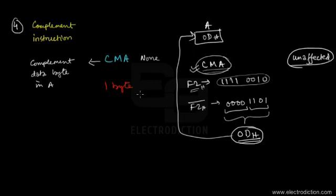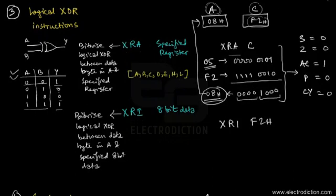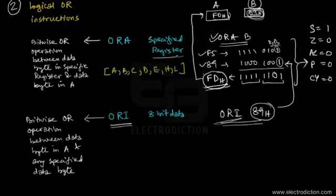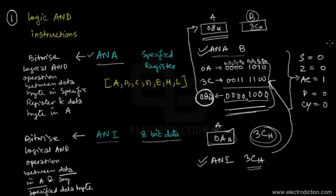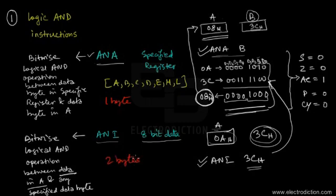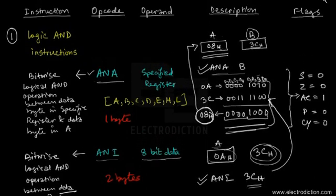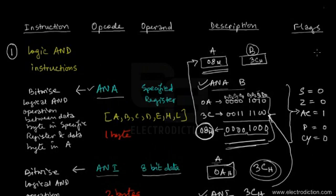CMA is a single-byte instruction. A general pattern: XRA is single-byte while XRI is two bytes. Instructions ending in A are single-byte instructions; instructions ending in I are two-byte instructions. So ORA is single-byte and ORI is two bytes; ANA is single-byte and ANI is two bytes. This wraps up our discussion on 8085 logical instructions — thanks for watching.